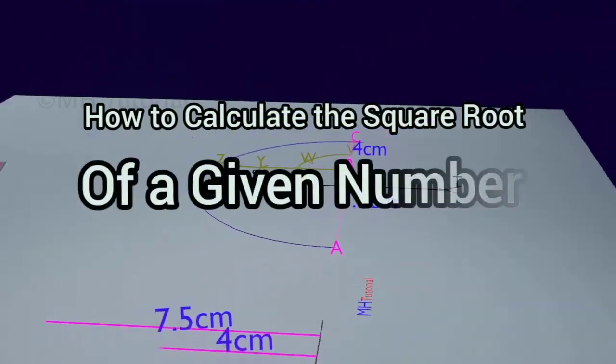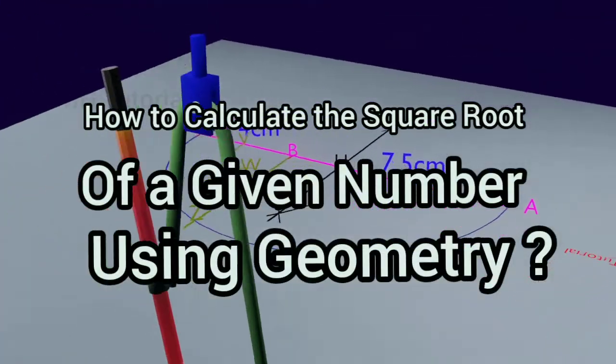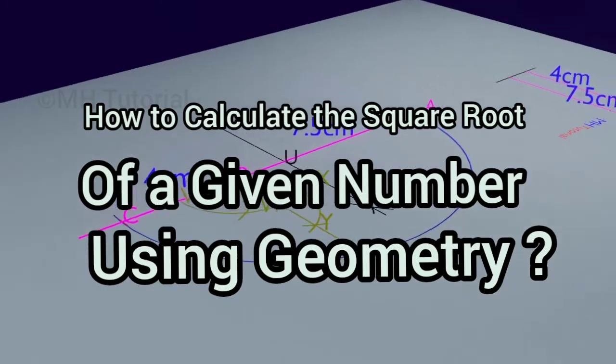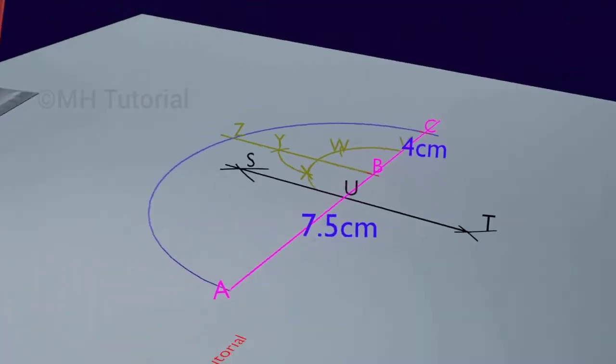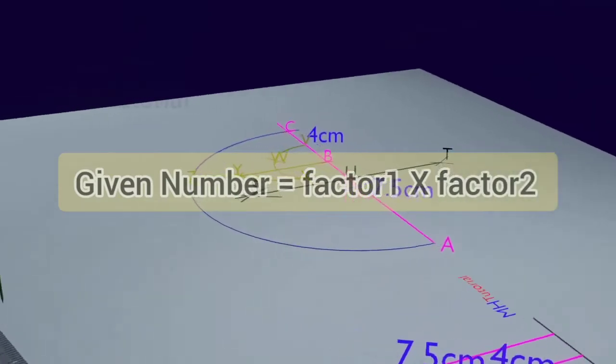How to calculate the square root of a given number using geometry. In this 3D animation video we are going to learn this. Now first of all, the given number whose square root is to be determined must be divided into two factors of its own.